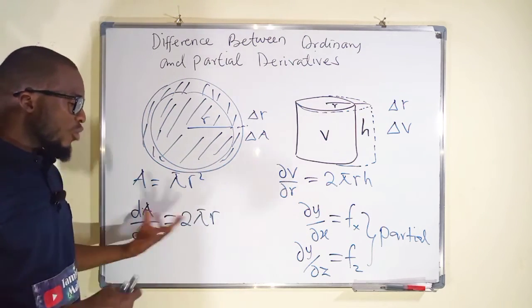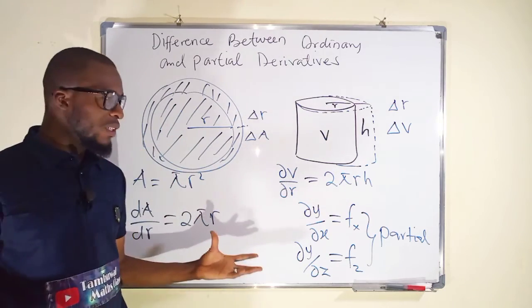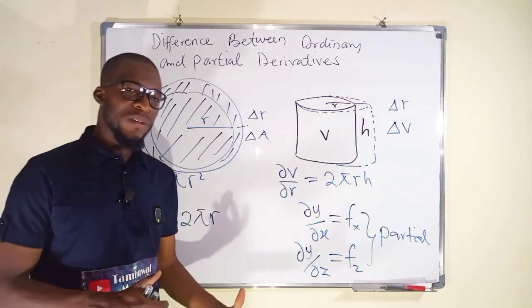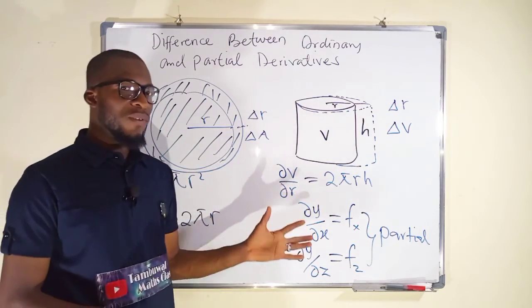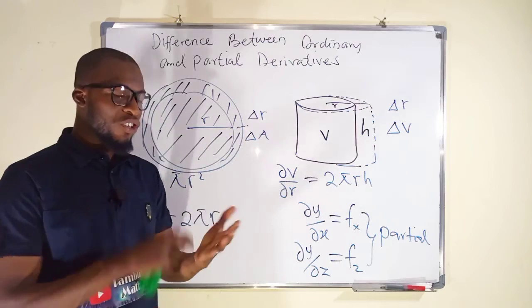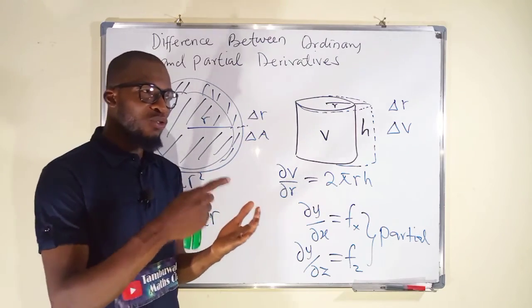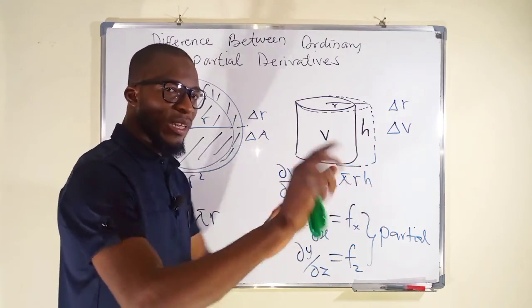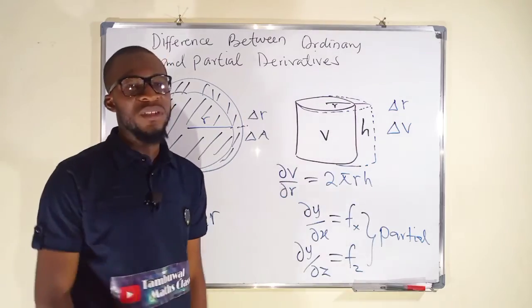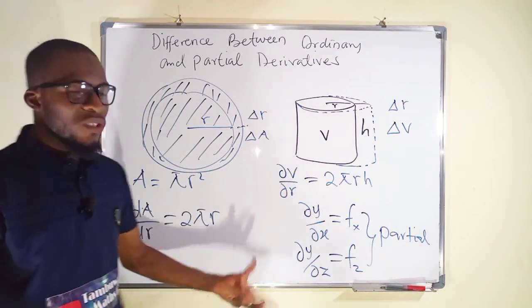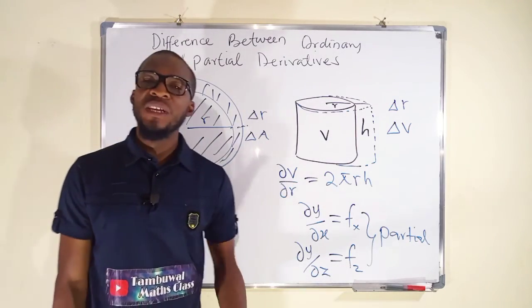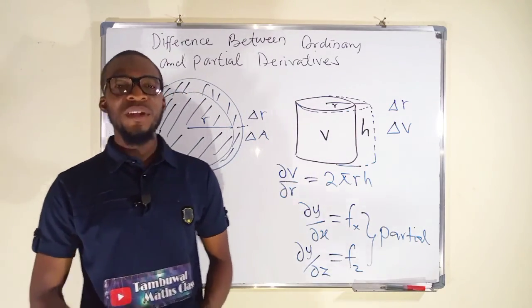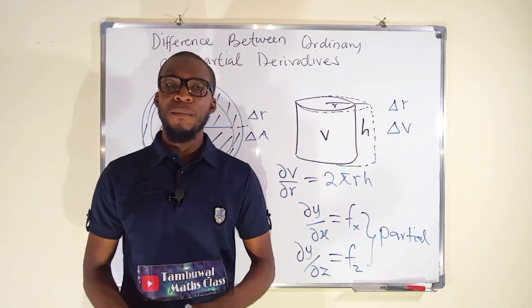So now you can see the difference between partial derivative and ordinary derivative. In partial derivative, you can differentiate a function with respect to one quantity leaving all other quantities as constants. That is all I have for you today. Thank you for watching. Do have a nice day.